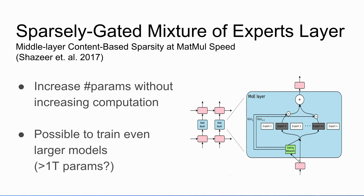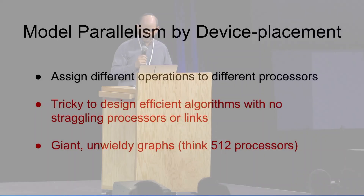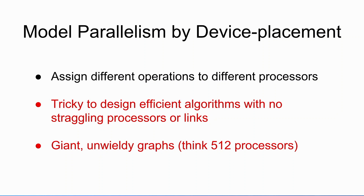We should be able to train some huge models that are really awesome. But the next big problem is memory constraints. What almost everyone does for training neural networks is data parallelism — replicating all the parameters on every processor and splitting the training batch across all processors. But what we really need to do for a big model is split the model itself, with different parameters or different layers across different processors. The way you can do model parallelism now is assign different operations to different processors — it's tricky. You have to figure out a different algorithm for every different network, and it creates giant graphs that are very irritating to work with.